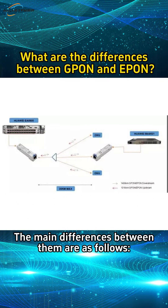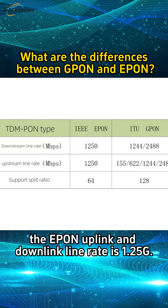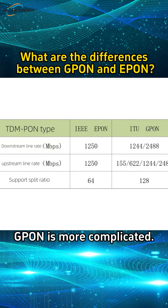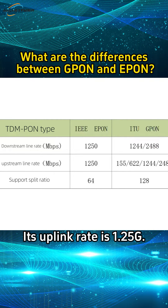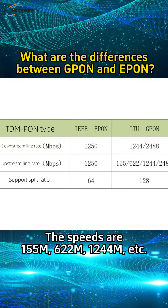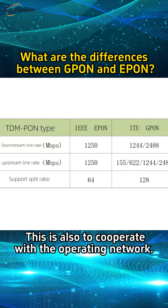The main differences between them are as follows. First, transmission rate. The EPON uplink and downlink line rate is 1.25G. GPON is more complicated — the download rate is 2.0G and the upload rate is 1.25G, with speeds of 155M, 622M, 1244M, etc., to cooperate with the operating network.